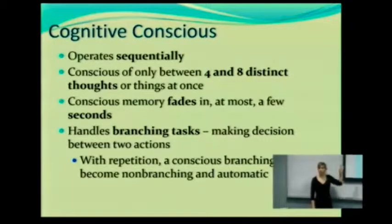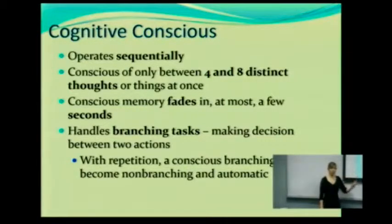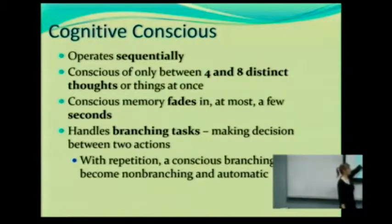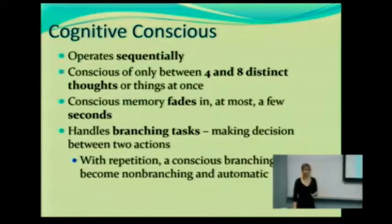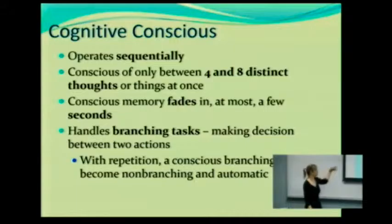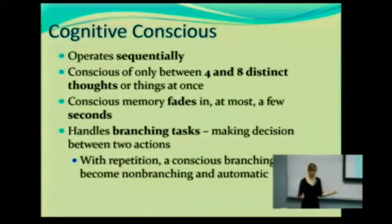Here's something I want you to really remember when it comes to consciousness that a lot of students tend to forget: consciousness is very good at handling branching tasks. Basically, making decisions. Raskin talks about making decisions between two actions, two tasks, but we actually can handle three or four tasks. You have to have that information in your awareness to make a decision and to reason about it.